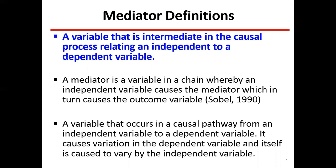In exactly the same way, independent and dependent variables are two parties. The independent variable affects the dependent variable, and the dependent variable depends on the independent. But sometimes between these two variables, another variable comes in, which we call the intermediate variable or mediator. In some books it is called an intervening variable — a variable that is intermediate in the causal process relating to independent and dependent variables.